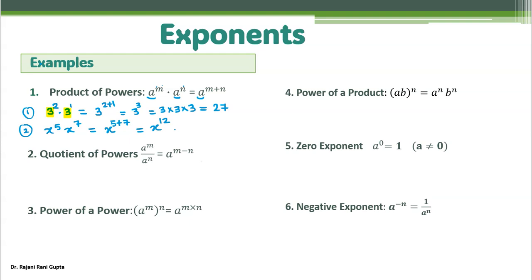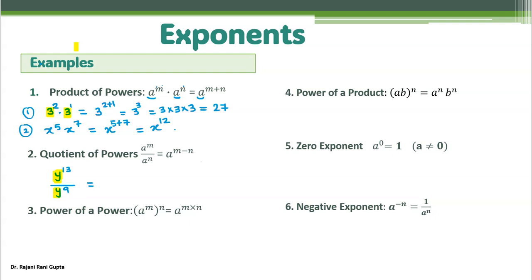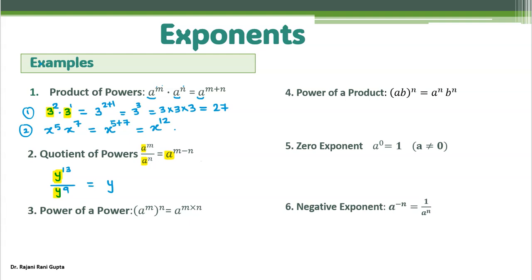Let's take an example for the quotient of powers rule. Suppose you have y to the power 13 divided by y to the power 9. The base is the same — y. So when the base is the same, write down the base once and subtract the powers: the numerator's power minus the denominator's power. So it is y to the power 13 minus 9, which gives y to the power 4.